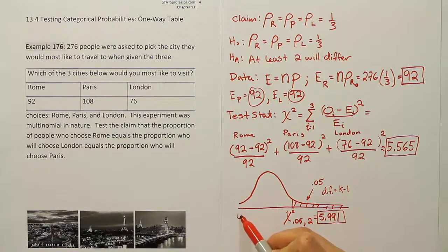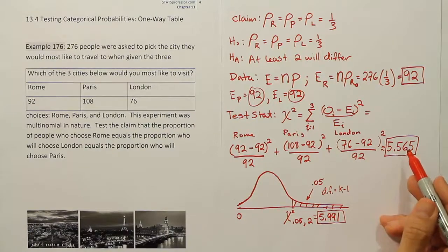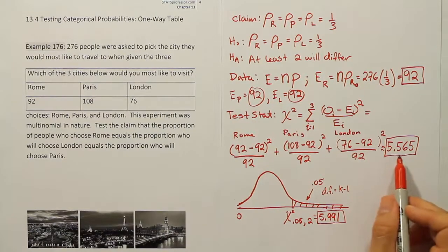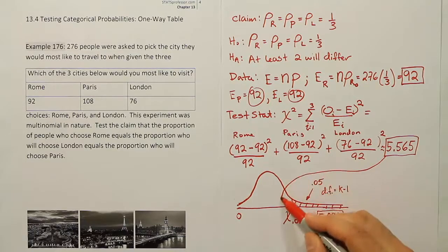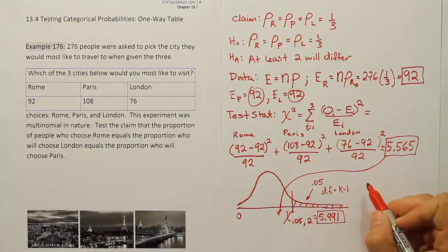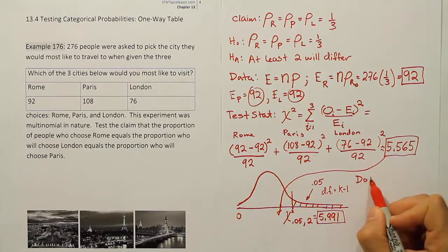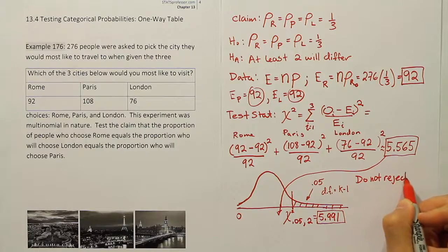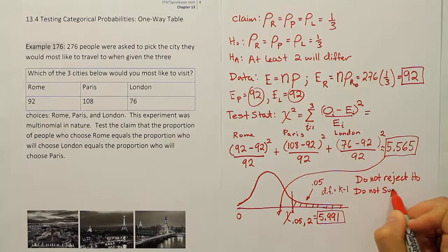We now compare our test statistic to the critical value. Our test stat of approximately 5.565 falls before the rejection region — it does not exceed 5.991 — so it's not in the rejection region. Therefore we do not reject the null hypothesis, and we do not support HA.